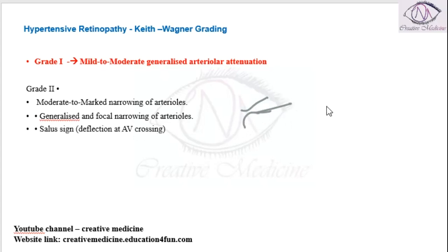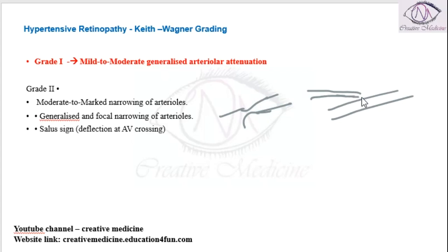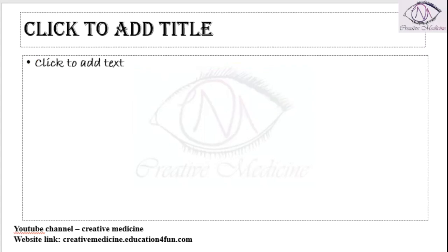What is the Salus sign? At the arteriovenous crossing, there is a deflection seen exactly at the AV crossing — that is the Salus sign, which is Grade 2.